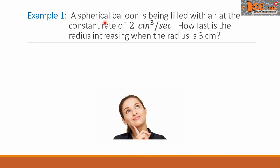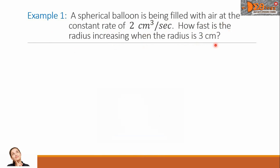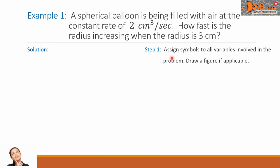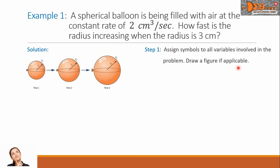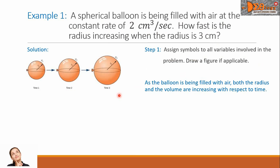Example 1. A spherical balloon is being filled with air at the constant rate of 2 cubic centimeters per second. How fast is the radius increasing when the radius is 3 centimeters? For our solution, Step 1 says: assign symbols to all variables involved in the problem and draw a figure if applicable. We have a figure here showing that as the balloon is being filled with air, both the radius and the volume are increasing with respect to time.